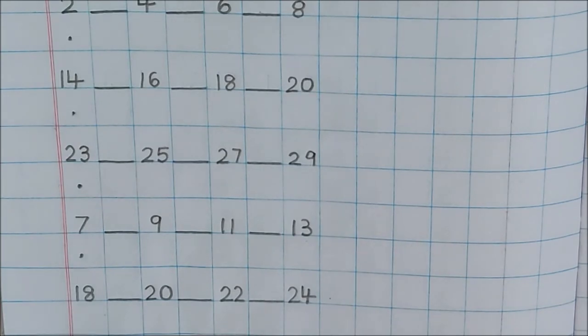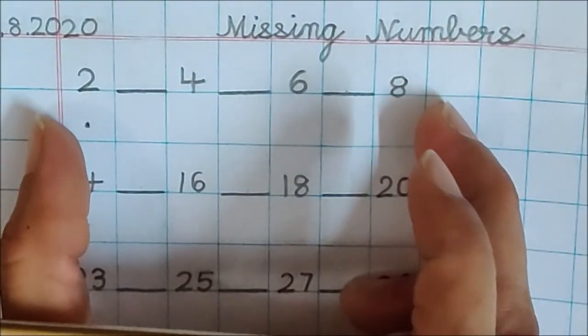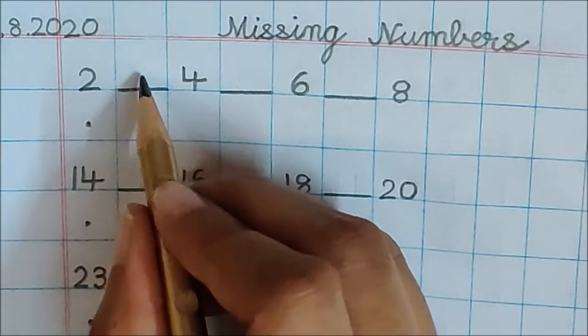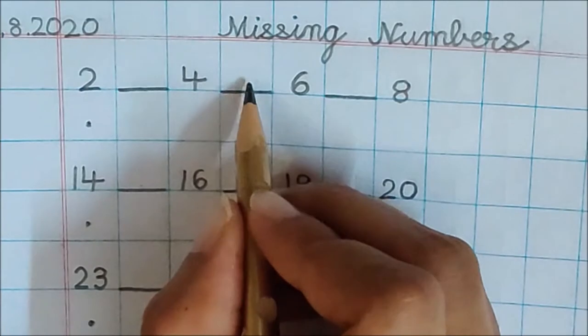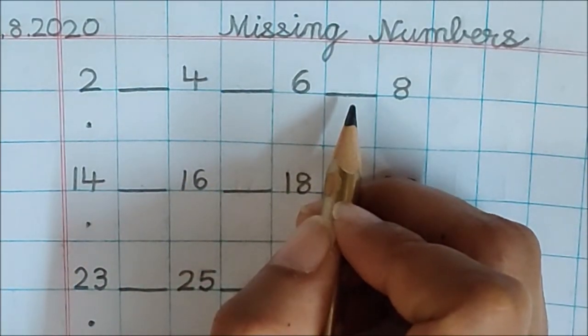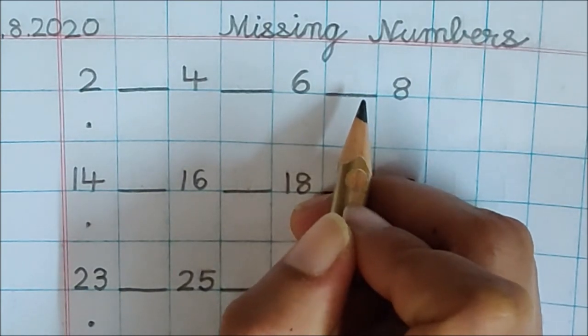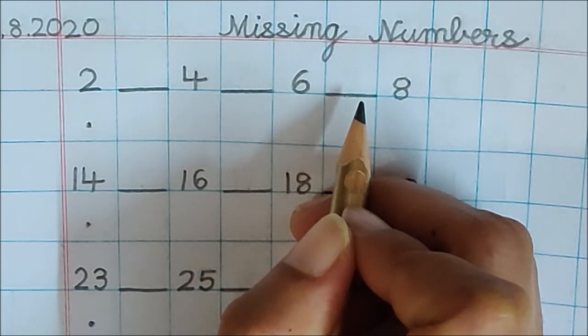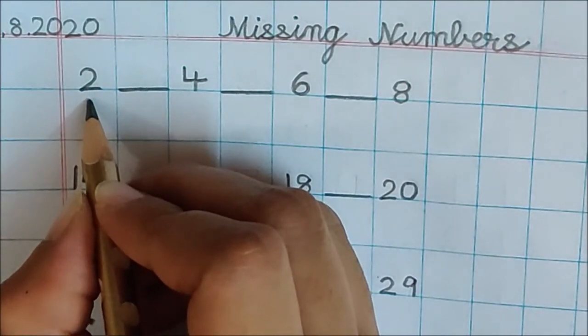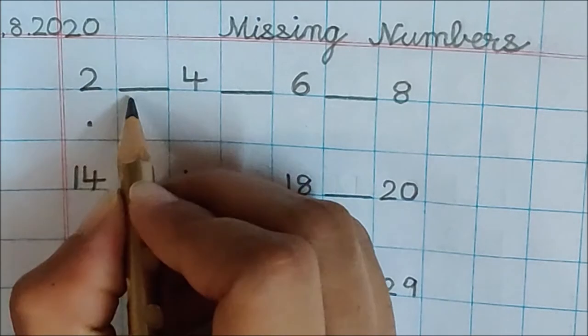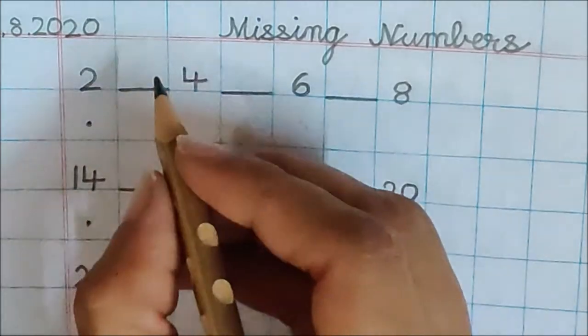Good. Now children, let us find missing numbers. Children, this is the first set of missing numbers. Look, numbers are missing here, here and here. But don't worry. We are very smart. And we will find all the missing numbers. So let us go to the first number. This is number 2. Children, what comes after 2? 2, 3. Very good.